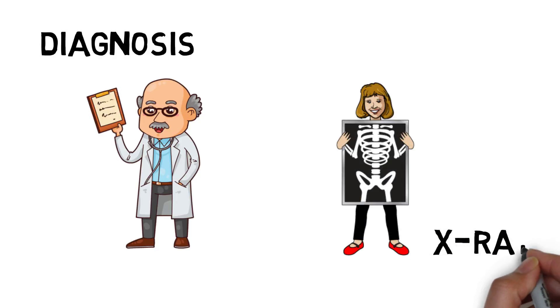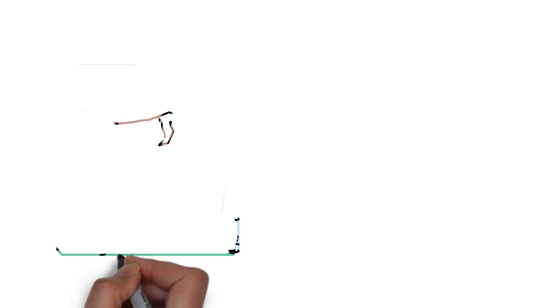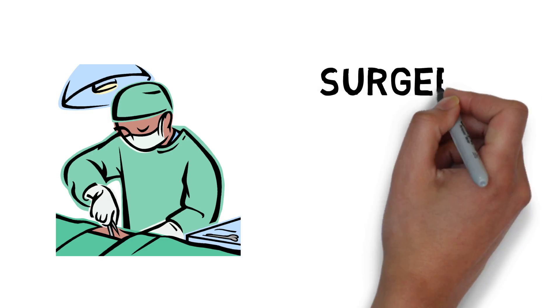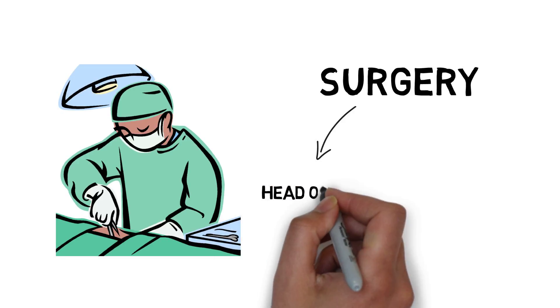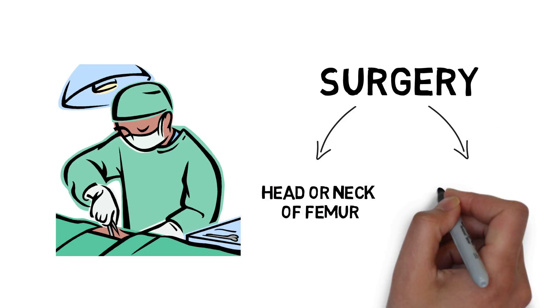Following a diagnosis based on an x-ray, hip fractures are usually treated with surgery through either replacing the head or neck of the femur or in more serious cases through total hip replacement.